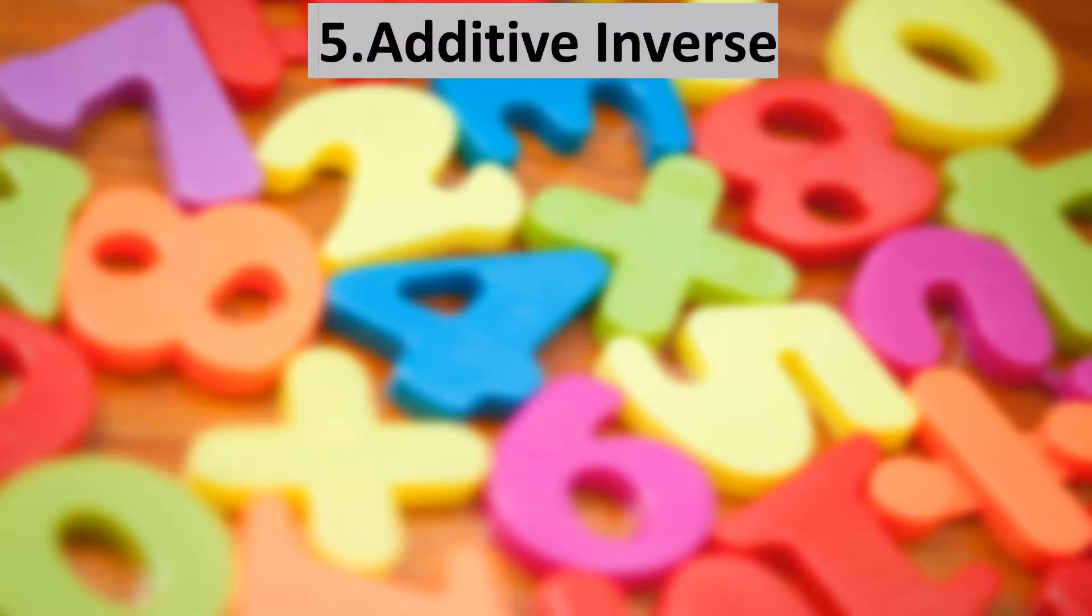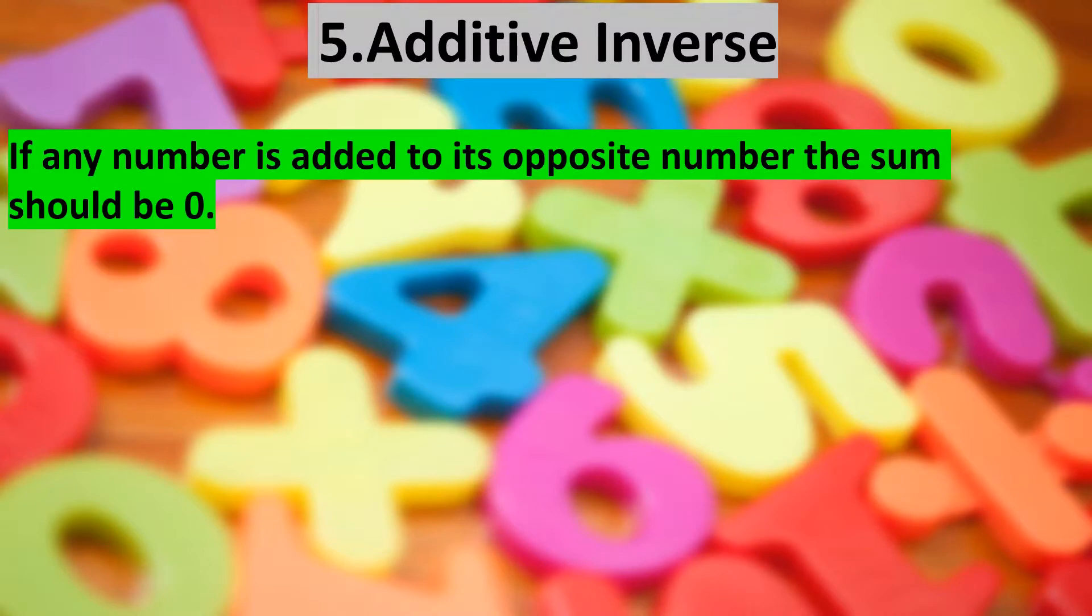Additive inverse property states that if any number is added to its opposite number, the sum should be 0. Look at this example, let's say A is equal to 5, so the inverse of 5 is minus 5. When these two numbers are added together, we get the result 0.